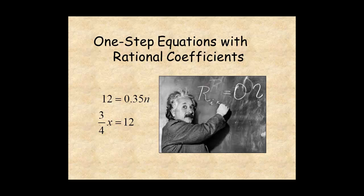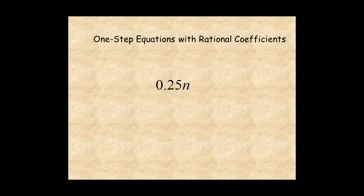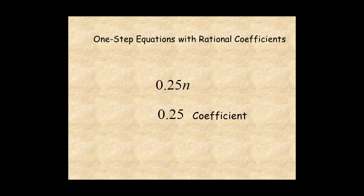This lesson shows how to solve one-step equations with rational coefficients — coefficients that are not whole numbers. An expression like 0.25n means 0.25 times n. In this expression, the number in front of the variable, 0.25, is called a coefficient. This lesson shows you how to solve equations with coefficients that are decimals or fractions.